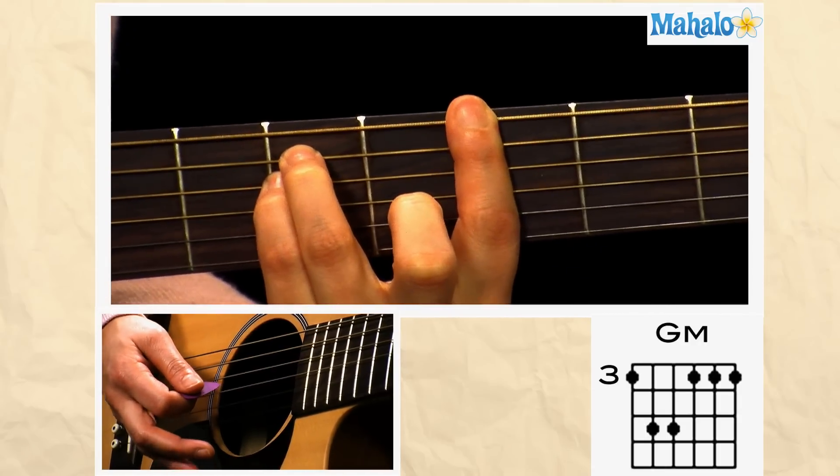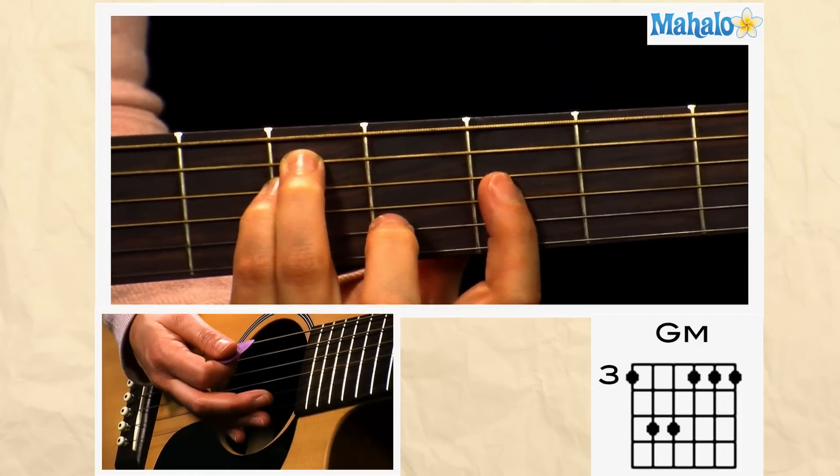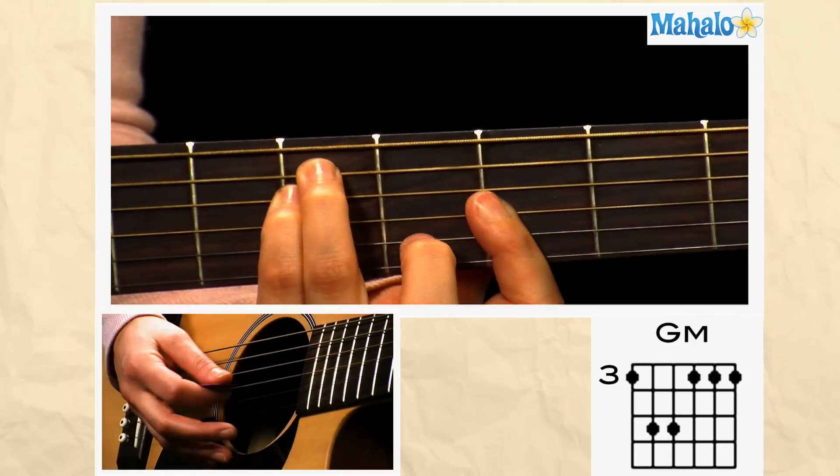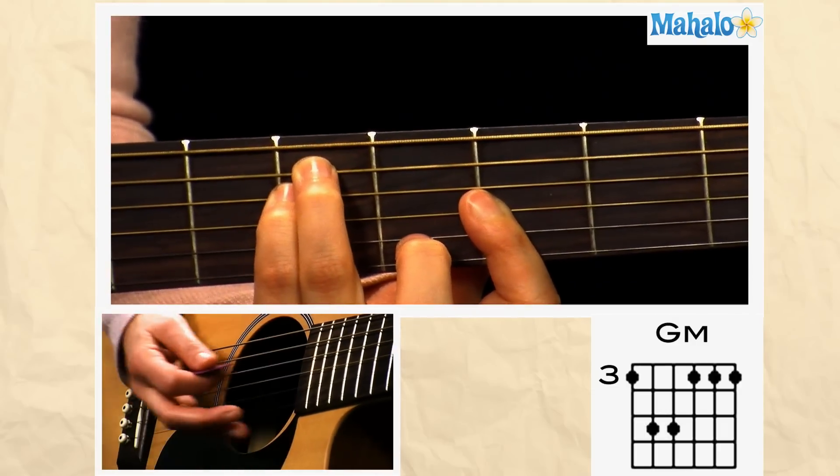Now, to get more of that minor sound to ring out, you can take this first finger and just bar the first three strings: the G, the B, and the E.